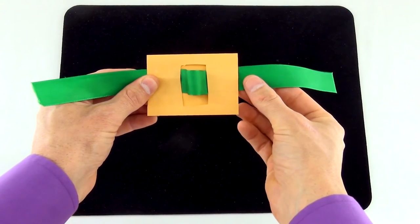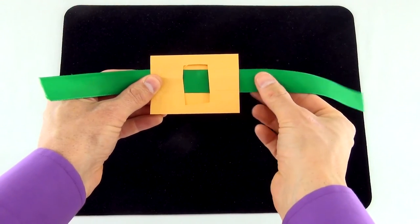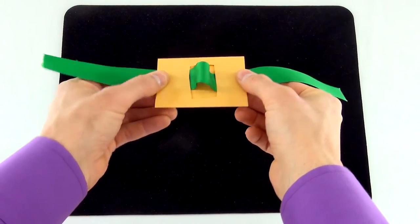You're now going to hold one end of the ribbon in place as you push the opposite end toward the middle. This will cause the ribbon to bunch in the middle and poke out of the hole in the back.